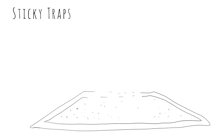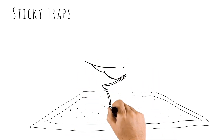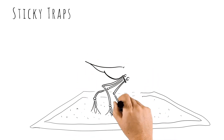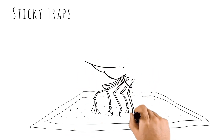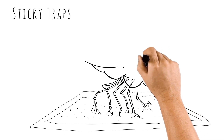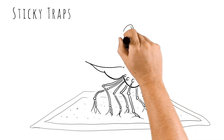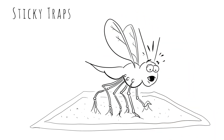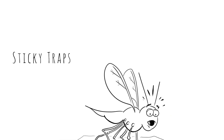Sticky traps are used to monitor and attract plant pest insects. In addition to aphids and whiteflies, yellow sticky traps attract adult fungus gnats. Every adult fungus gnat trapped is another adult that cannot lay eggs.